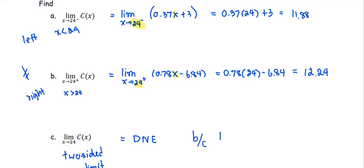Because the left-sided limit of the cost is not the same as the right-sided limit of the cost function, the two-sided limit does not exist.